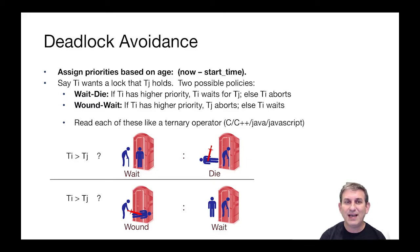Suppose that you have a transaction TI that wants a lock that TJ currently holds. There are two possible policies that have been proposed: one called wait-die and one called wound-wait.